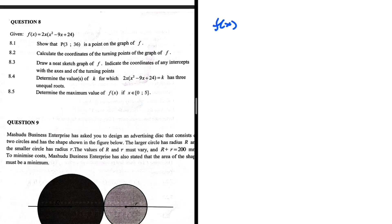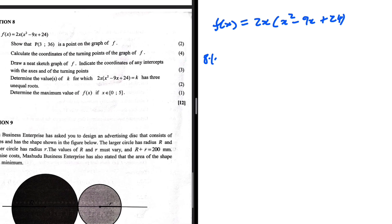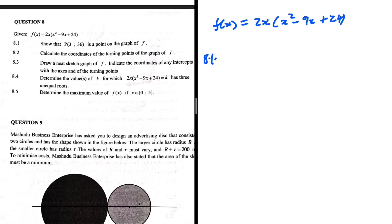Given f(x) = 2x(x² - 9x + 24), question 8.1 asks us to show that point P with x-coordinate 3 and y-coordinate 36 is on the graph of f. To do this, we substitute x = 3 into the function and check we get 36.